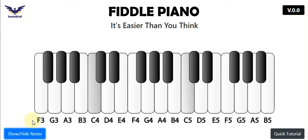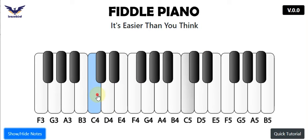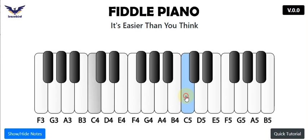Next, come to the octave. From this C to this C is called the octave, and it goes like this: C, D, E, F, G, A, B, C. And these are the black keys, also known as sharps.